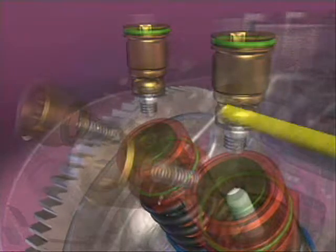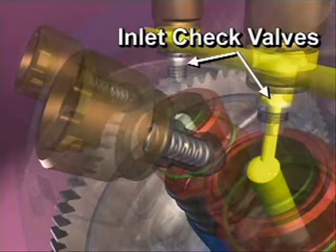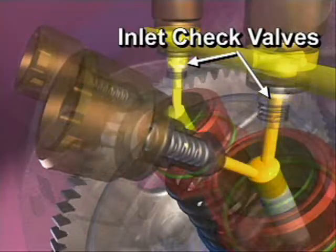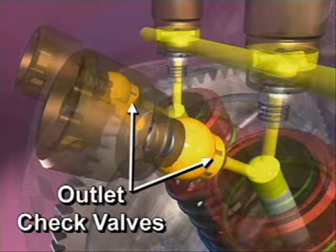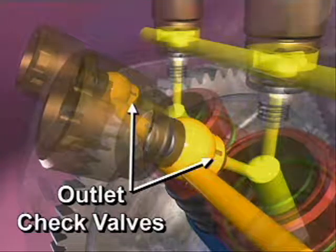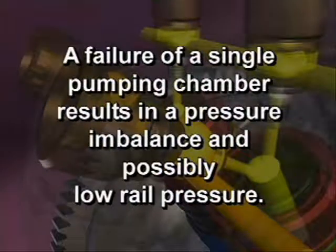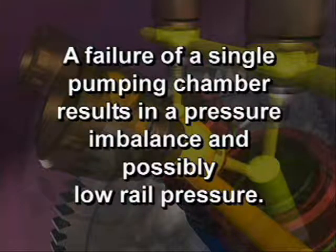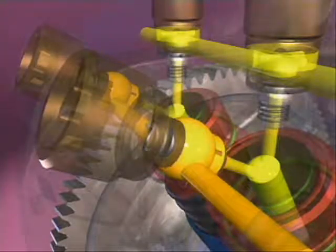Inlet and outlet check valves act to develop and hold fuel rail pressure. The inlet check valve holds fuel inside the pumping chamber so that it may be pressurized. The outlet check valve holds the fuel rail pressure inside the rail so that it does not leak back into the pumping chamber. A failure of a single pumping chamber results in a pressure imbalance and possibly low rail pressure. The ECM can detect this condition and will register a fault code.